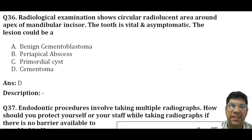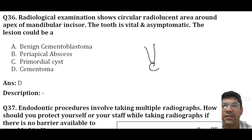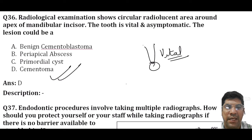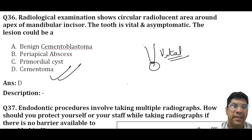A radiographic examination shows circular radiolucency around the apex of the mandibular central incisors. The tooth is vital and asymptomatic. The answer is cementoma, seen in the anterior region. There is a radiolucency near the periapical region of the mandibular anterior teeth; the teeth are generally vital and asymptomatic.